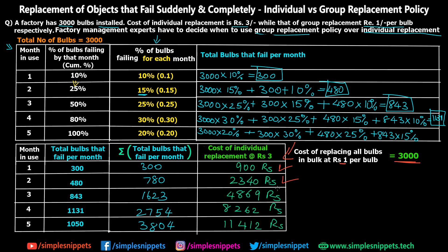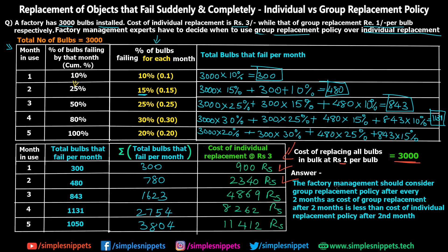The final answer is: the factory management should consider group replacement policy after every two months, as the cost of group replacement (₹3000) after two months is less than the cost of individual replacement policy after the second month (₹2340 cumulative, rising to ₹4869 by month 3). This was a numerical on replacement of objects that fail suddenly and completely, demonstrating how to decide which policy — individual replacement or group replacement — is more suitable at which duration.